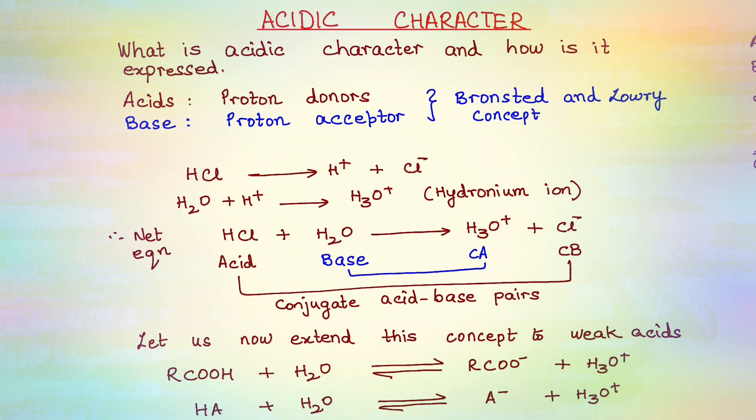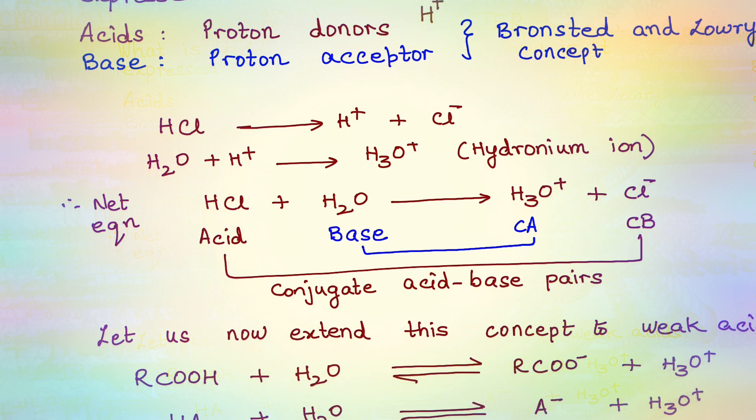We are going to discuss the acidic character in terms of the proton. Acids are proton donors whereas bases are proton acceptors. What do we mean by proton? Proton means simply a hydrogen atom which has been rid of its electron. Do you think that this proton can exist independently? No, a proton cannot exist independently, so what it does is it combines with a water molecule to form what we call as the hydronium ion.